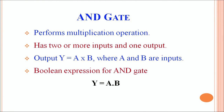The basic operation performed in the AND gate is multiplication. The output Y equals A multiplied by B, where A and B are the inputs. The Boolean expression for the AND gate is represented as Y = A·B.